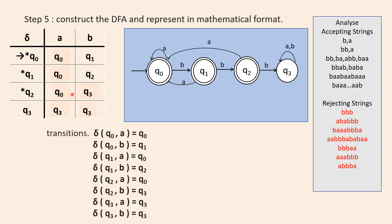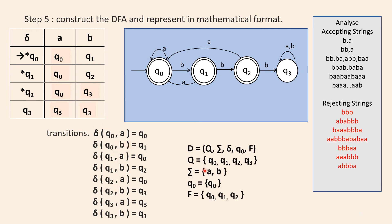We have the completed transition table and these are the transitions. Representing them in mathematical format: the states are Q0, Q1, Q2, and Q3. The input symbols are A and B. Q0 is the start state and Q0, Q1, Q2 are the final states.